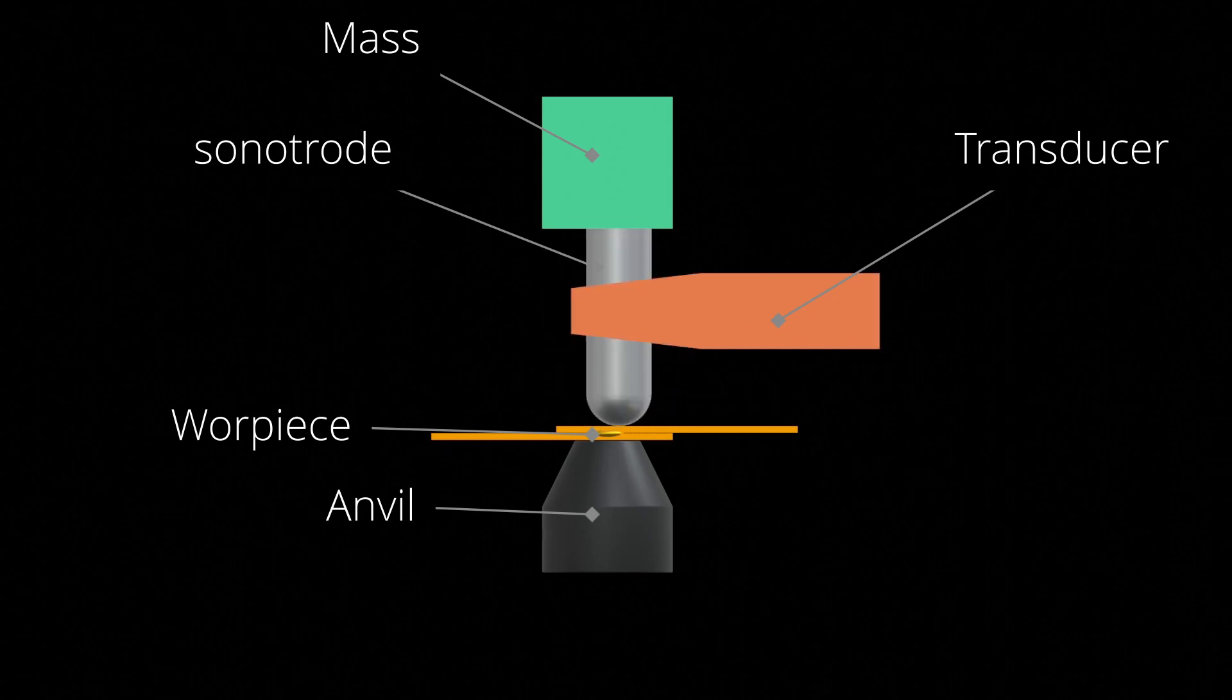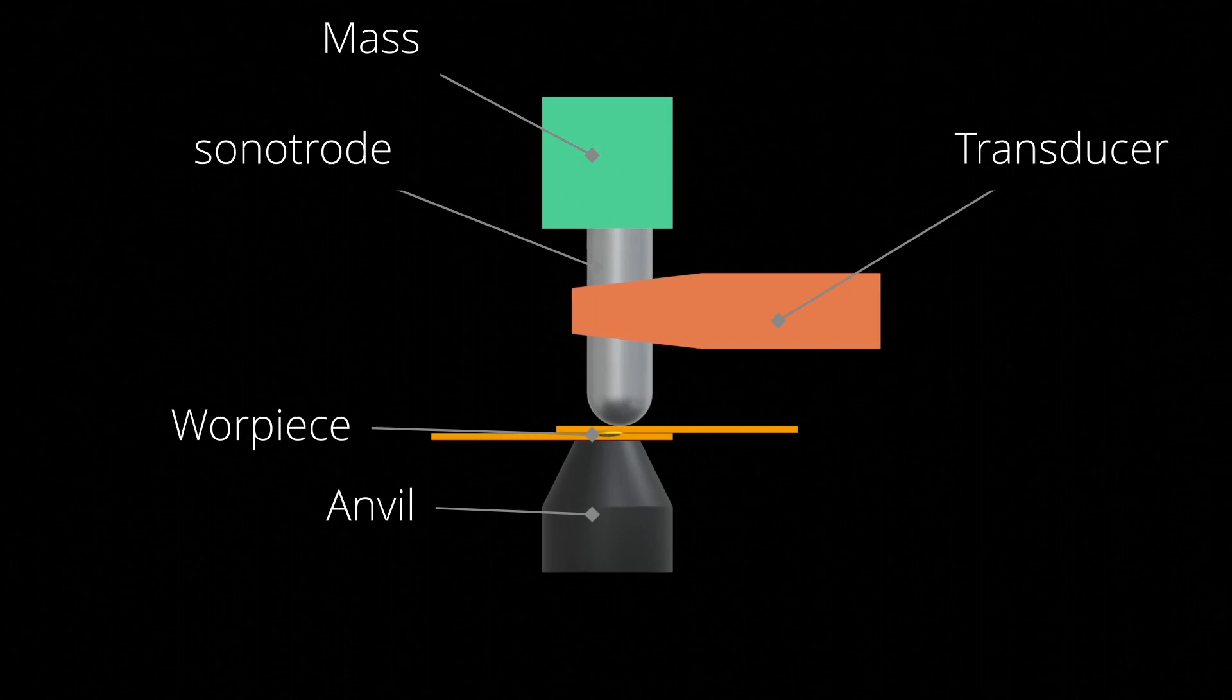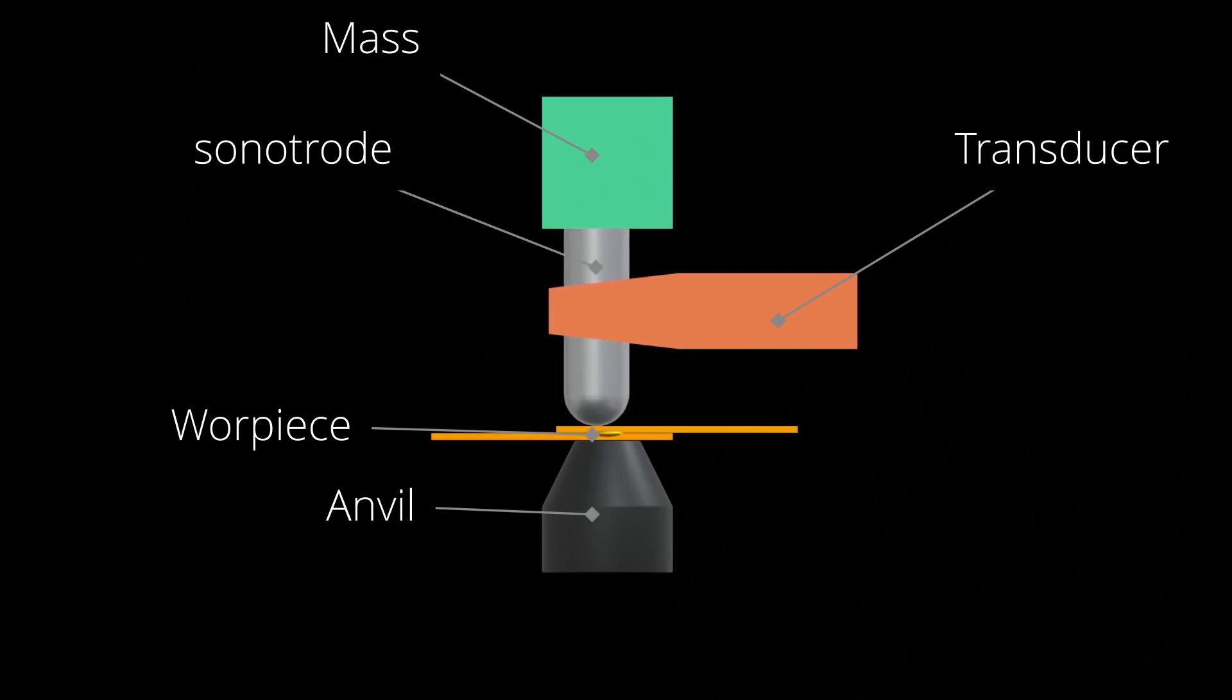Consequently, the two surfaces intermingle, creating a solid-state weld without the need for melting, as depicted in the video demonstration.